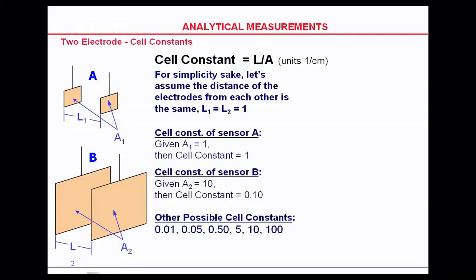So the bigger the cell, the smaller the amount of conductivity that is measured. Other cell constants are 0.01, 0.10. On the market there are some 0.5s as well.